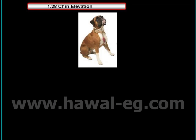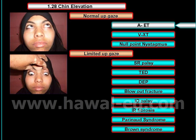In cases with chin elevation, firstly we determine if there is normal elevation of both eyes or there is a limitation of elevation of one or both eyes. If there is normal elevation of both eyes, we proceed to identify the underlying cause.